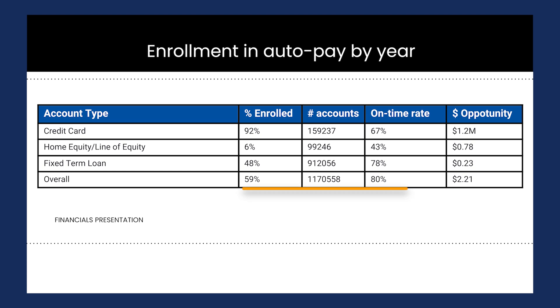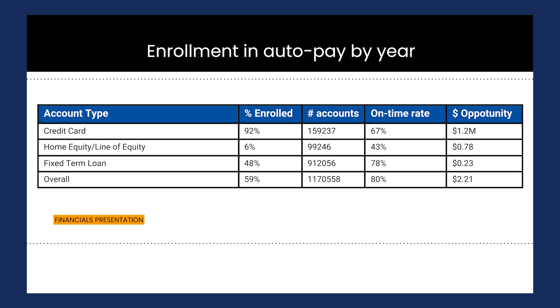Another great place for tables is in the appendix. This is where you can pack as much detail as the audience might need or anticipate needing, so that information is there for reference but it's not impacting your main message.